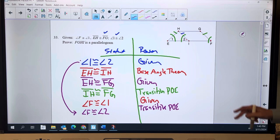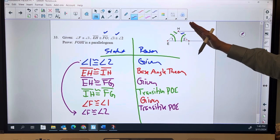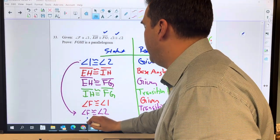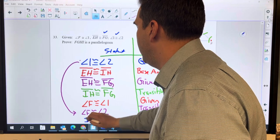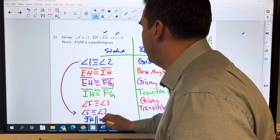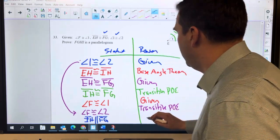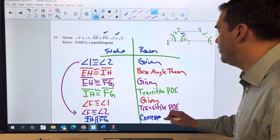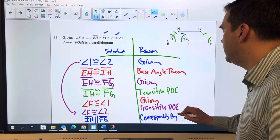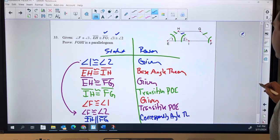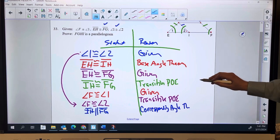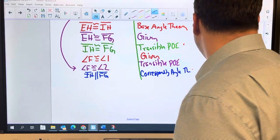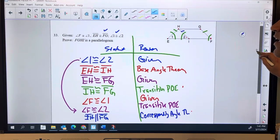All right. And now, since those angles are congruent, IH, since we're naming them from the bottom, IH is parallel to FG. And now we've got the opposite sides are congruent, the opposite sides are parallel, and so we can say that FGHI.